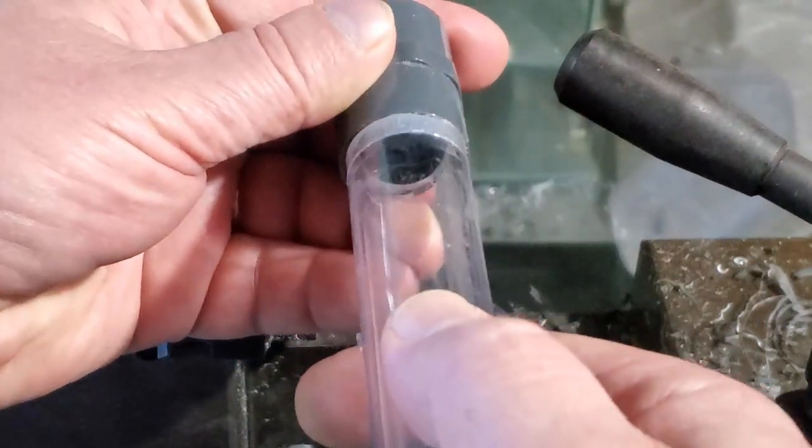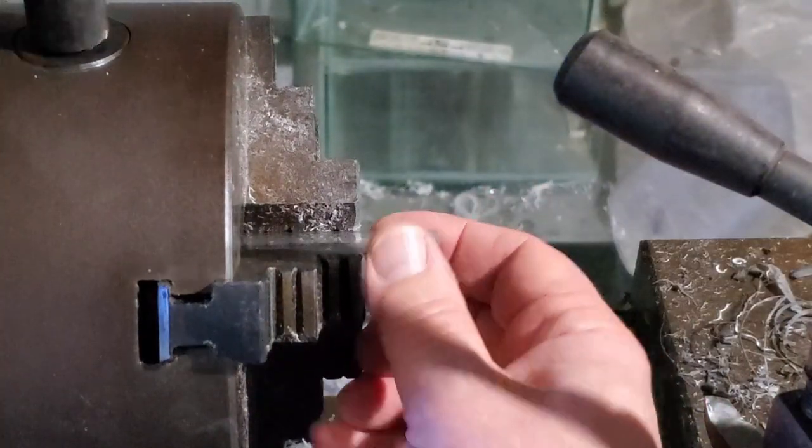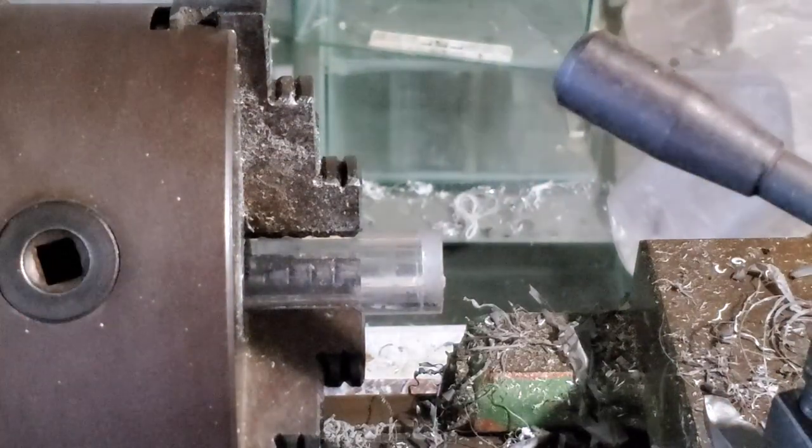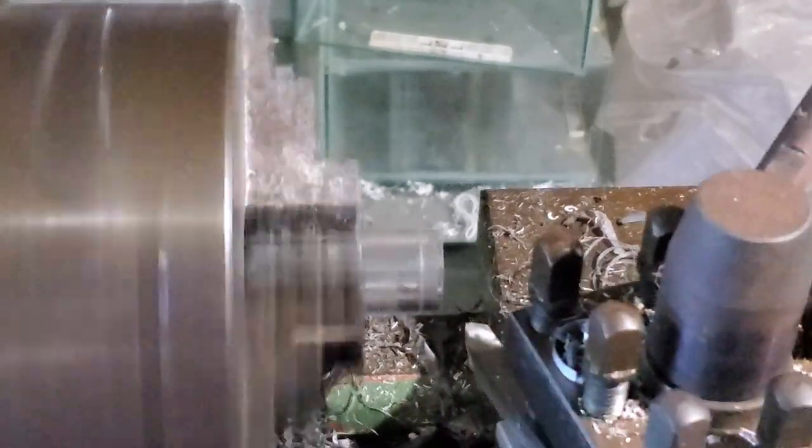I'm going to turn down a lid to slightly more than the outside diameter of the pipe, and then go through the process of welding that all up and turning it down to size. This pipe is supposed to fit in here. This is a piece of what I thought was acrylic I had sitting around the shop.